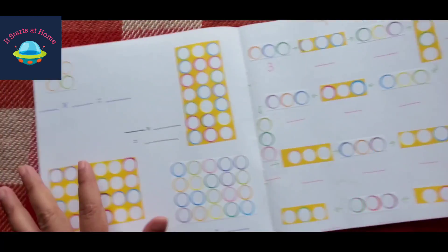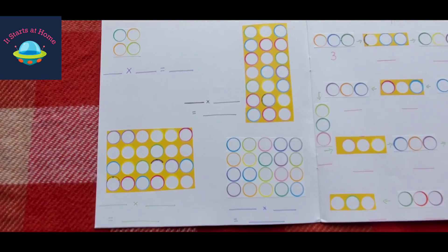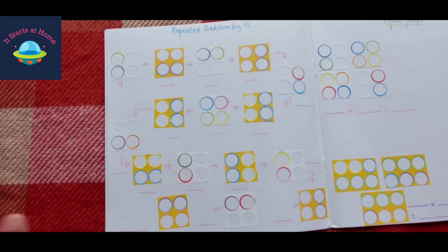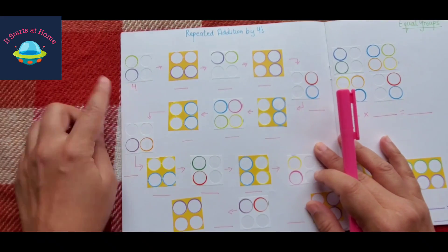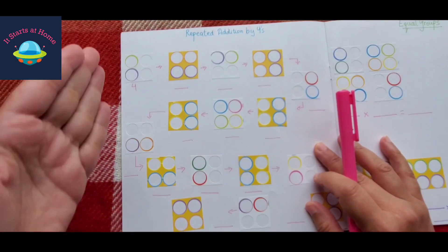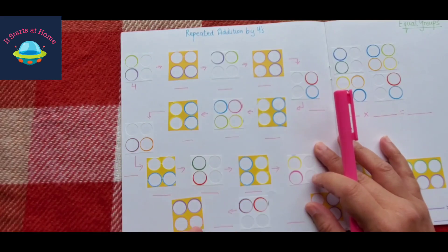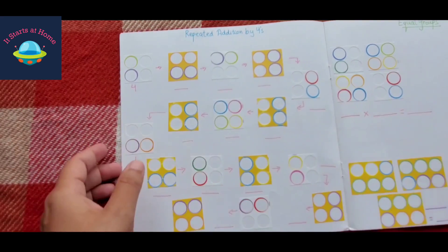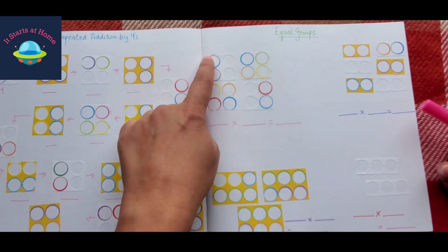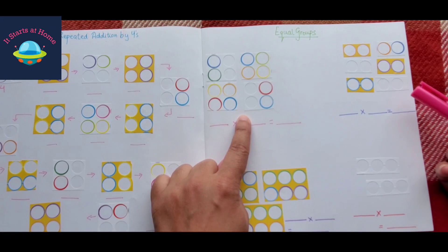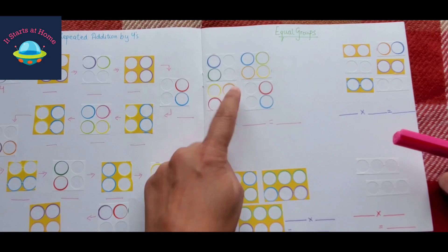This was array method by the stickers that were just left. This is repeated addition by fours. I have again cut the stickers in four and I've placed it right here to do repeated addition. Now this was equal groups, so as you can see there are four groups of four, there are six groups of two.